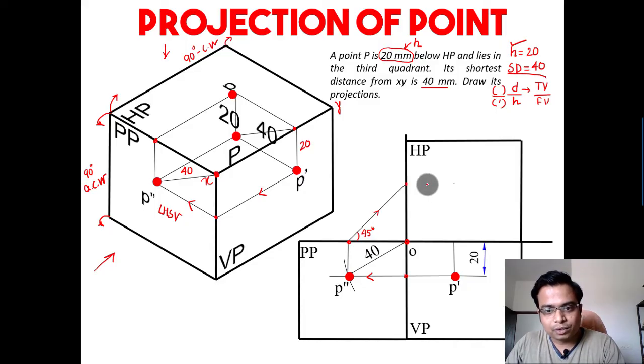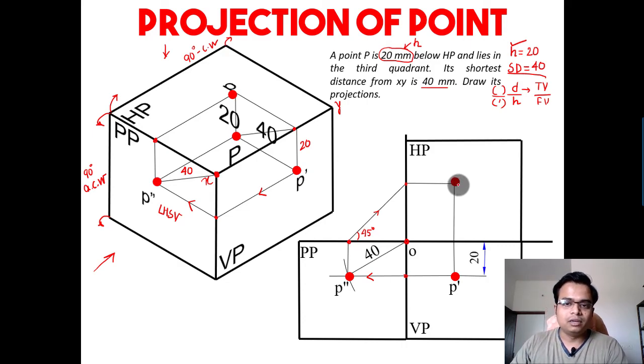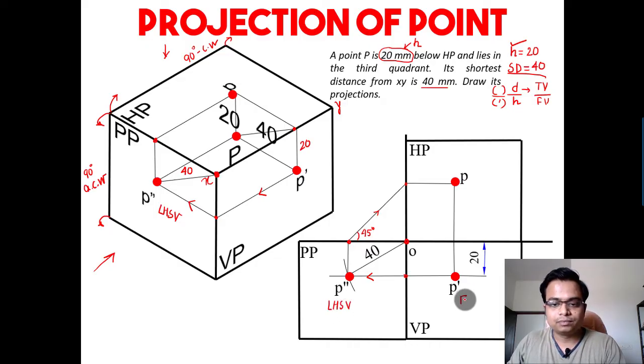And this point will precisely give you the location of the top view of the point P. That's it. This is left-hand side view, this over here is the front view - P dash corresponds to front view - and this right here is top view. Done and dusted. Problem is over.